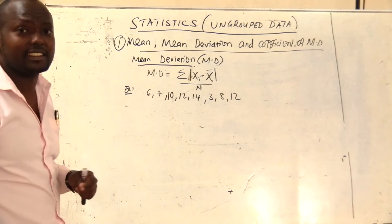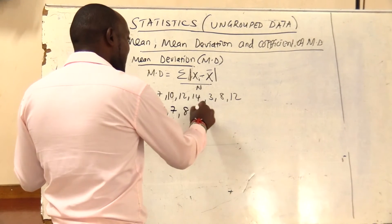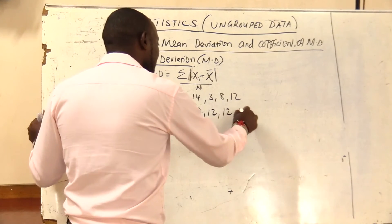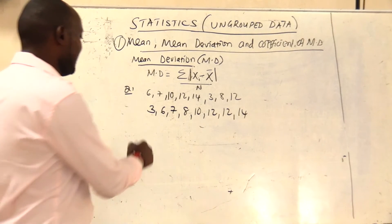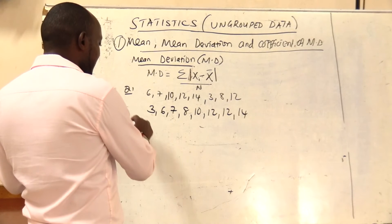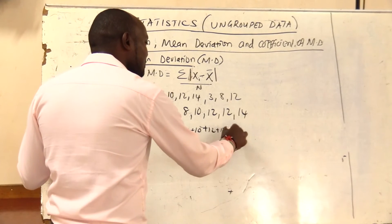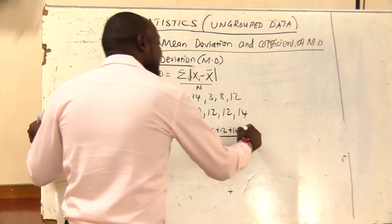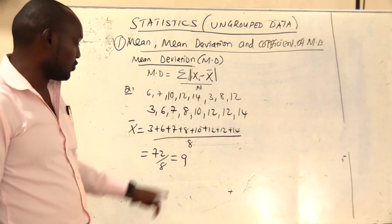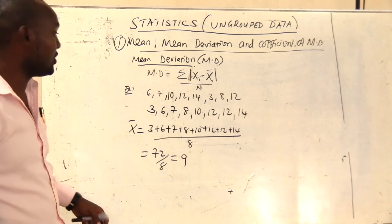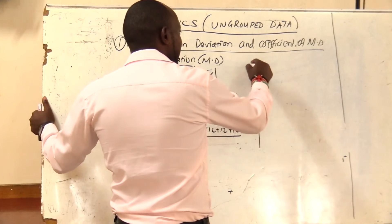I will introduce a column for x and a column for xi minus x̄. My data arranged are 3, 6, 7, 8, 10, 12, 12, and 14. My arithmetic mean is 9. So I need xi minus x̄: 3 minus 9 gives minus 6; 6 minus 9 gives minus 3; 7 minus 9 gives minus 2; 8 minus 9 gives minus 1; 10 minus 9 gives 1; 12 minus 9 gives 3; 12 minus 9 gives 3; 14 minus 9 gives 5.